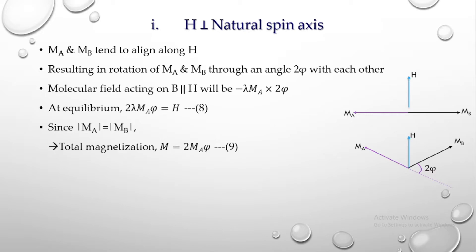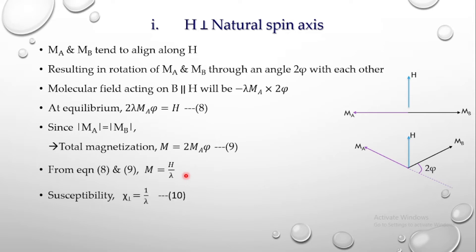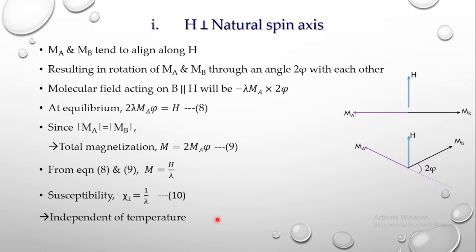Comparing equations 8 and 9, we get M = H/λ, substituting 2·MA·φ as M. Since M/H is susceptibility, and we have considered H perpendicular to the spin axis, we write: χ⊥ = M/H = 1/λ, which is equation 10. It is clear that this susceptibility is independent of temperature. Therefore χ⊥ remains equal to 1/λ at absolute zero, at Neel temperature, or at any temperature — since λ is the internal field constant.